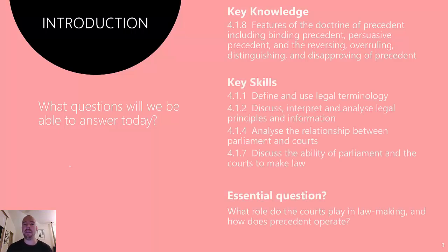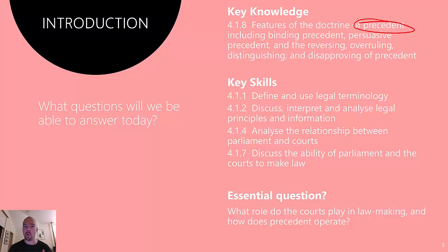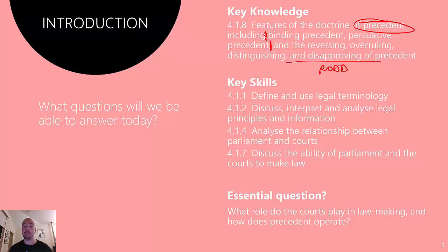Today is 4.1.8, and we're into lawmaking by the courts now. We've just come off 4.1.7, which is statutory interpretation, and today we're going to talk about precedent. We'll touch on the idea of lawmaking by the courts and a little bit of the history of that. We'll touch on what binding and persuasive precedent are, and then we'll talk about reversing, overruling, distinguishing, and disapproving — or ROD around precedent. We'll also touch on the relationship between courts and parliament and the discuss skill.